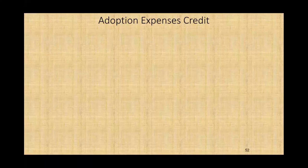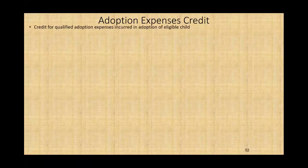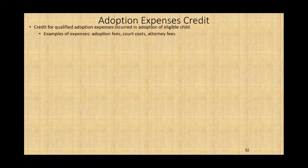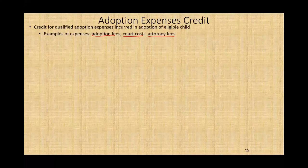Adoption expense credit is our topic today. Basically, if a couple would like to adopt, they will get a credit for expenses they incurred for that adoption because it's very expensive to adopt — it costs a lot of money. Therefore, the government says if you want to do so, we'll try to help a little bit. There is a credit for qualified adoption expenses incurred in the adoption of an eligible child. Examples of expenses include adoption fees, court costs, and attorney fees — and believe me, they amount to a lot.